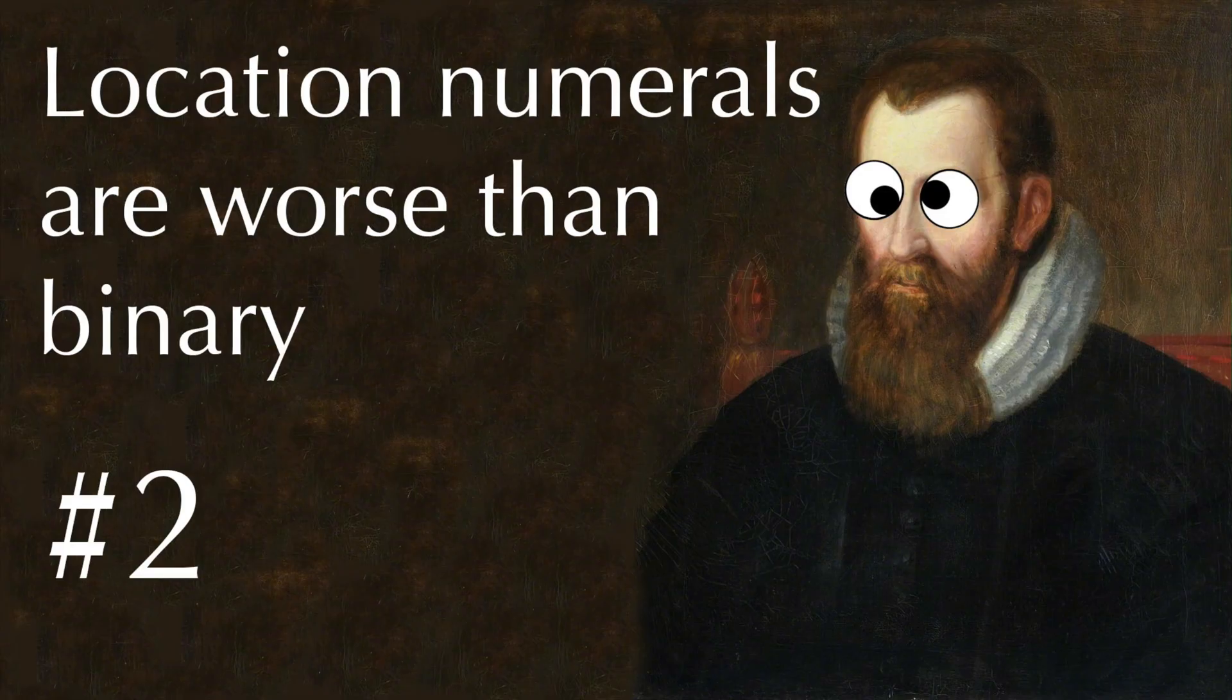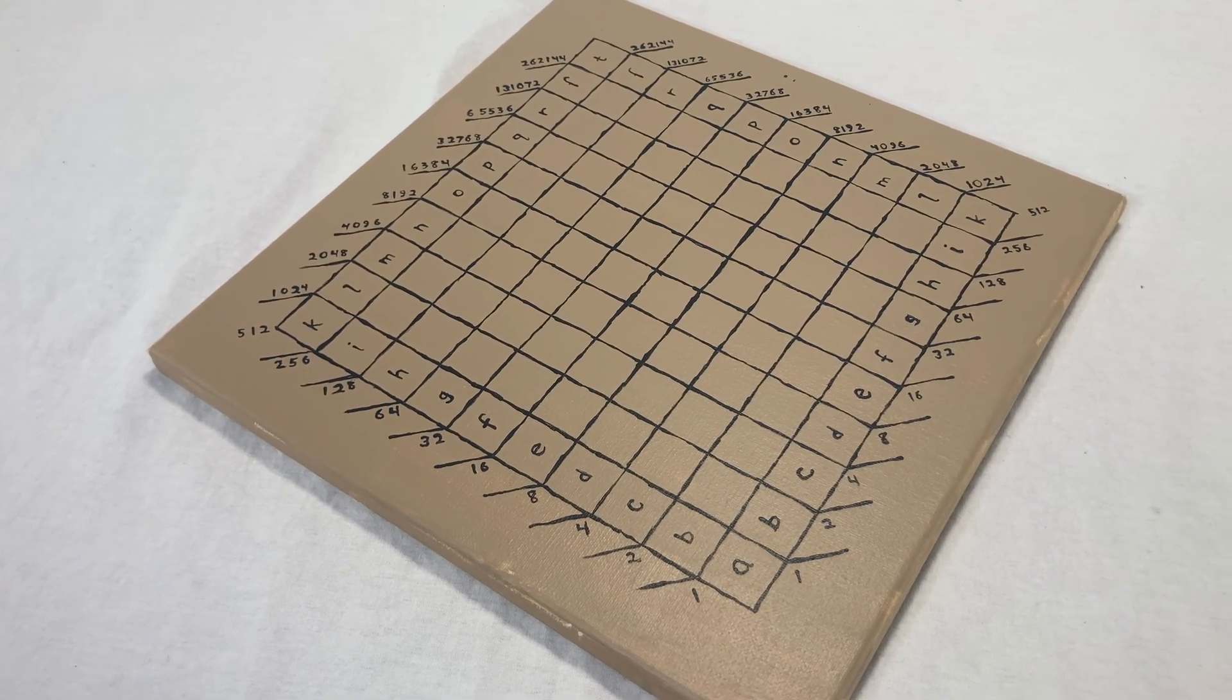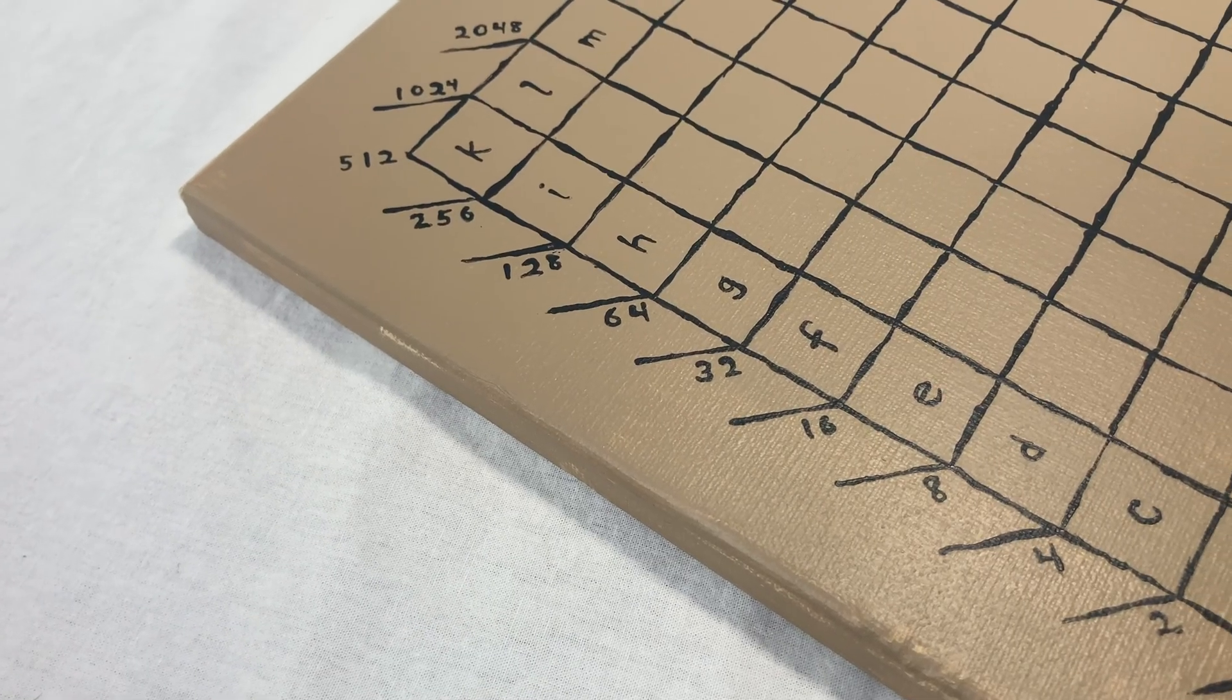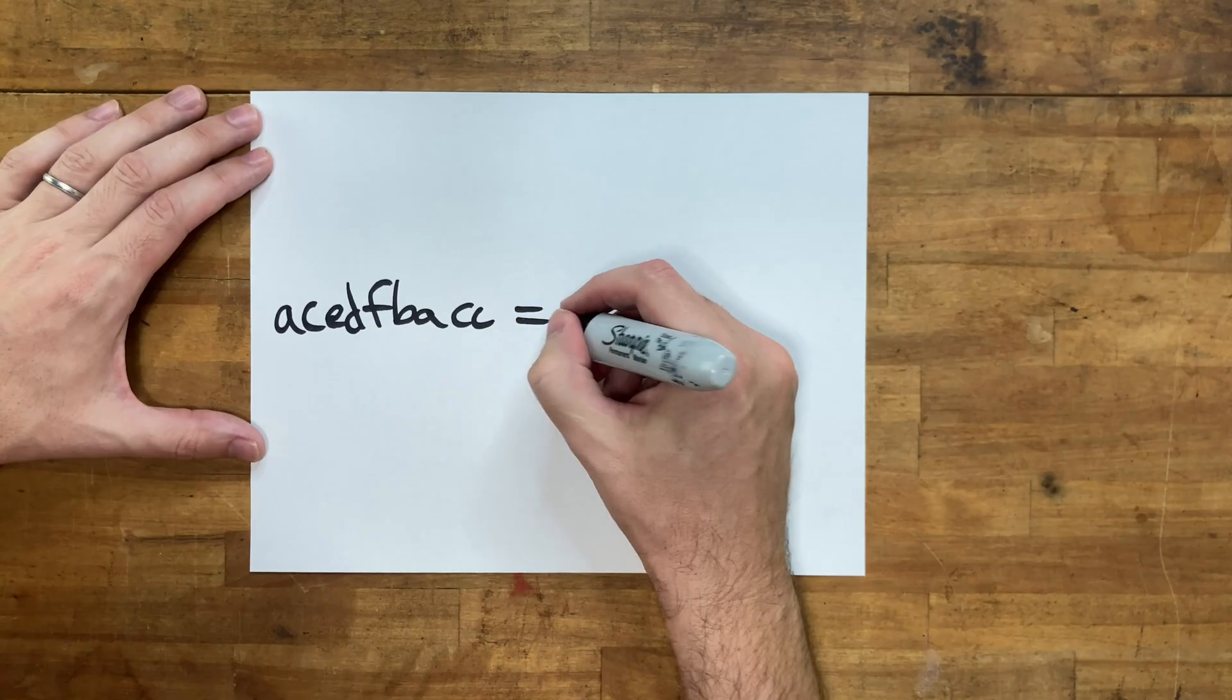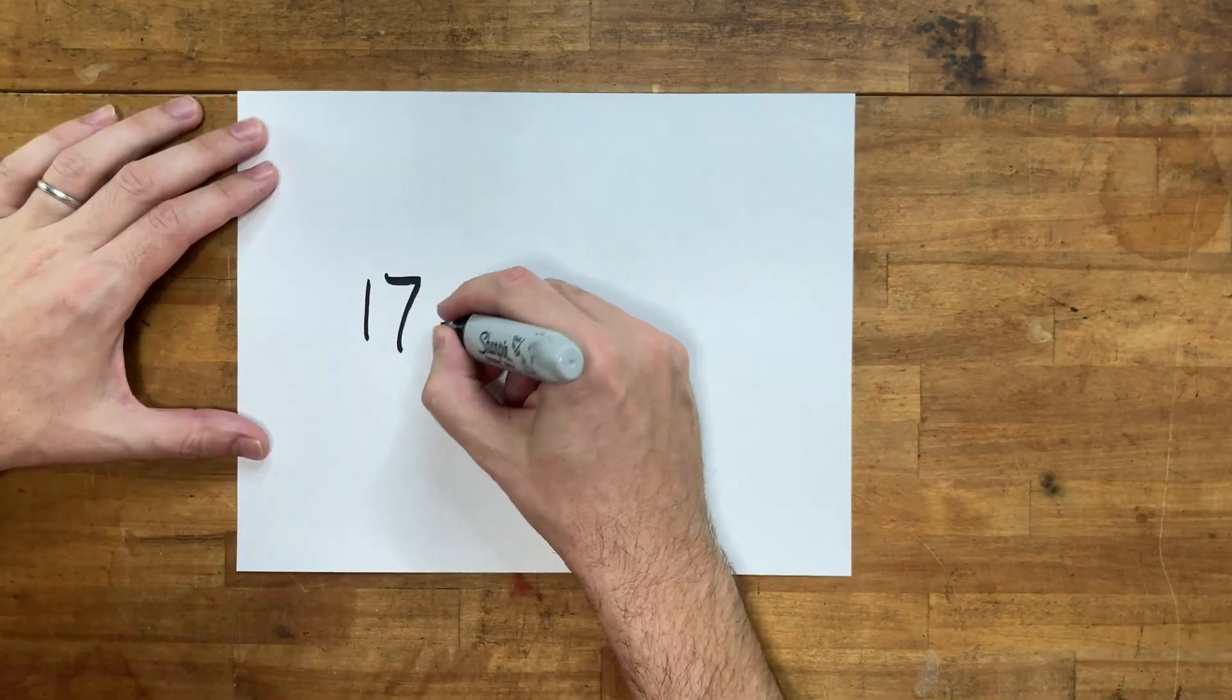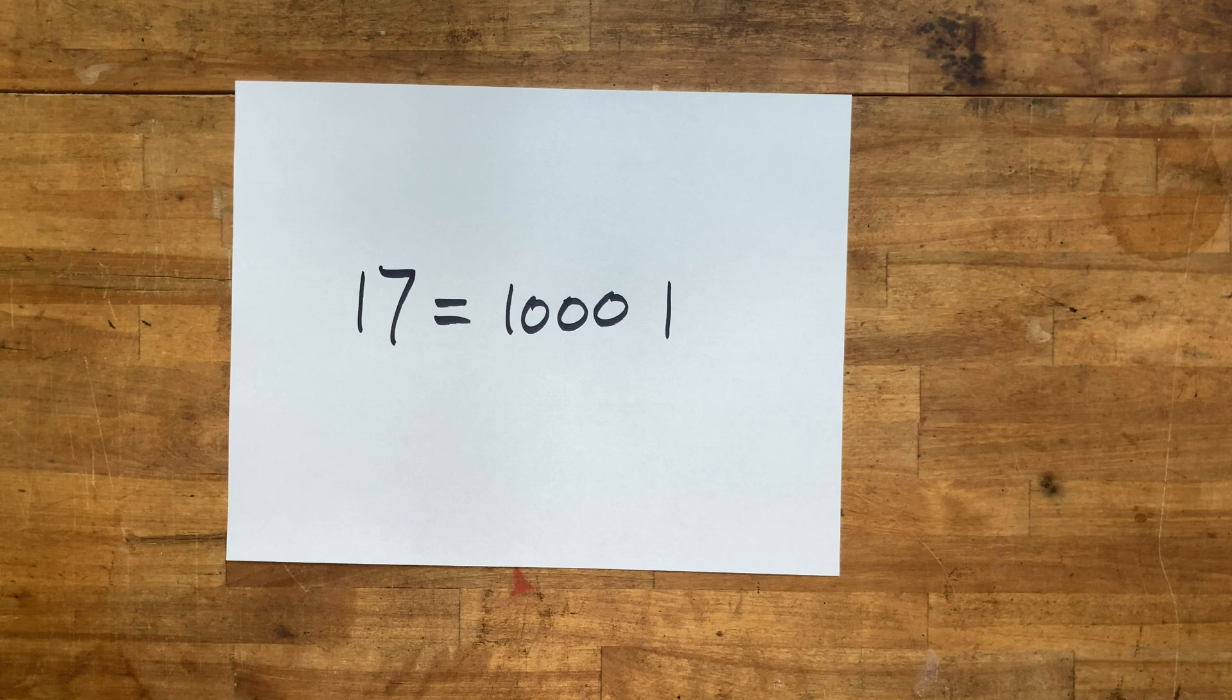Reason number two, unique representations. Whole numbers in binary have unique representations. Just like base ten numbers. This is something that we take for granted, but it's kind of fundamental. Like, can you tell if these two things represent the same number? They do not. What about these two things? I don't know. In binary, the number 17 looks like this. And that's it. In location numerals, there are over 9,000 ways to write the number 17. Come on, merch!